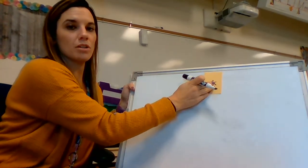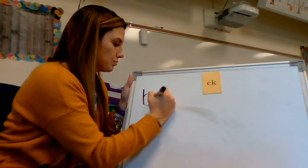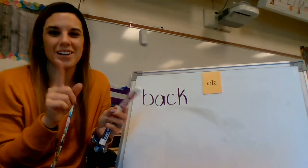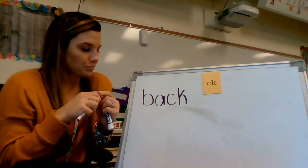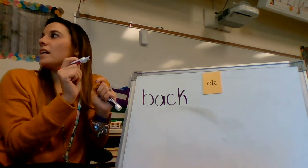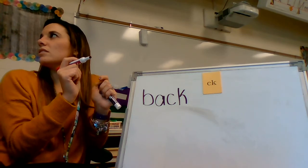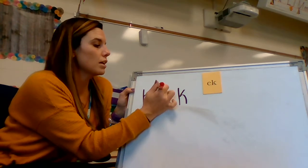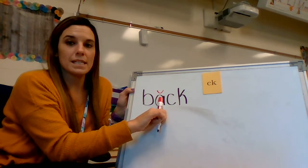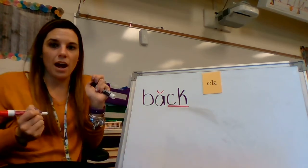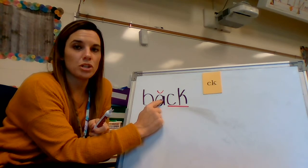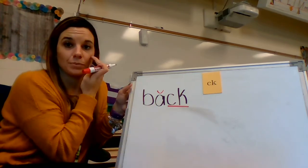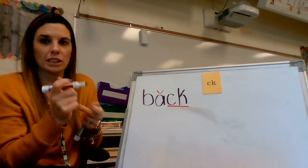Let's write the word 'back.' Let's mark up the word first. We have a consonant B, and here we have a short vowel — I'm going to mark it up like this — that means it's a short vowel, it says /a/. Here we have the CK digraph. Notice how it's at the end after a short vowel. Let's tap out this word: B-A-CK — back. This is the word 'back.'